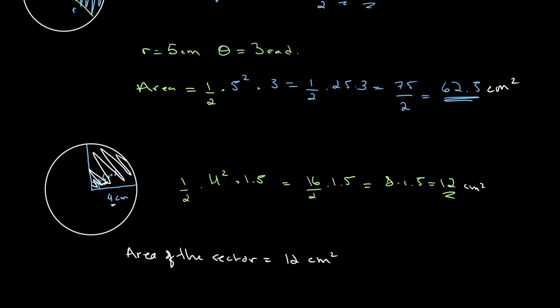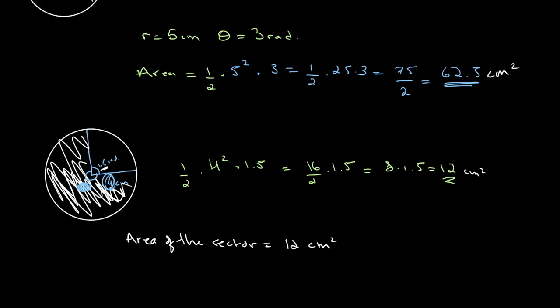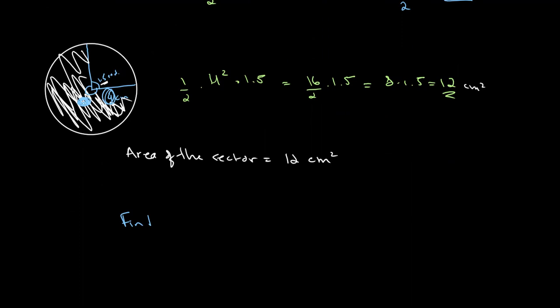Now let's say that instead of finding the area of this sector, we want to find the area of the rest of the circle — the larger shaded part. We already have our radius of 4 centimeters. All we need to do is find the new value of theta and plug it into the equation. We need to find theta, knowing that r equals 4.